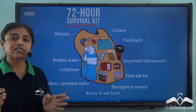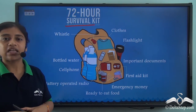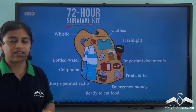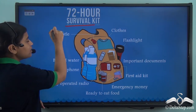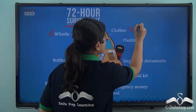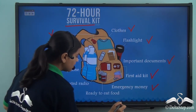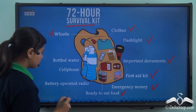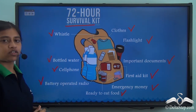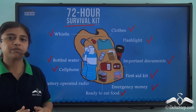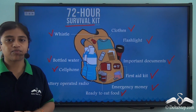A 72-hour survival kit must include a whistle, clothes, flashlight, important documents, first aid kit, emergency money, ready-to-eat food, battery-operated radio, cell phone and bottled water. These are essential items to be prepared with if you are living in a flood-prone area or any disaster-prone area.